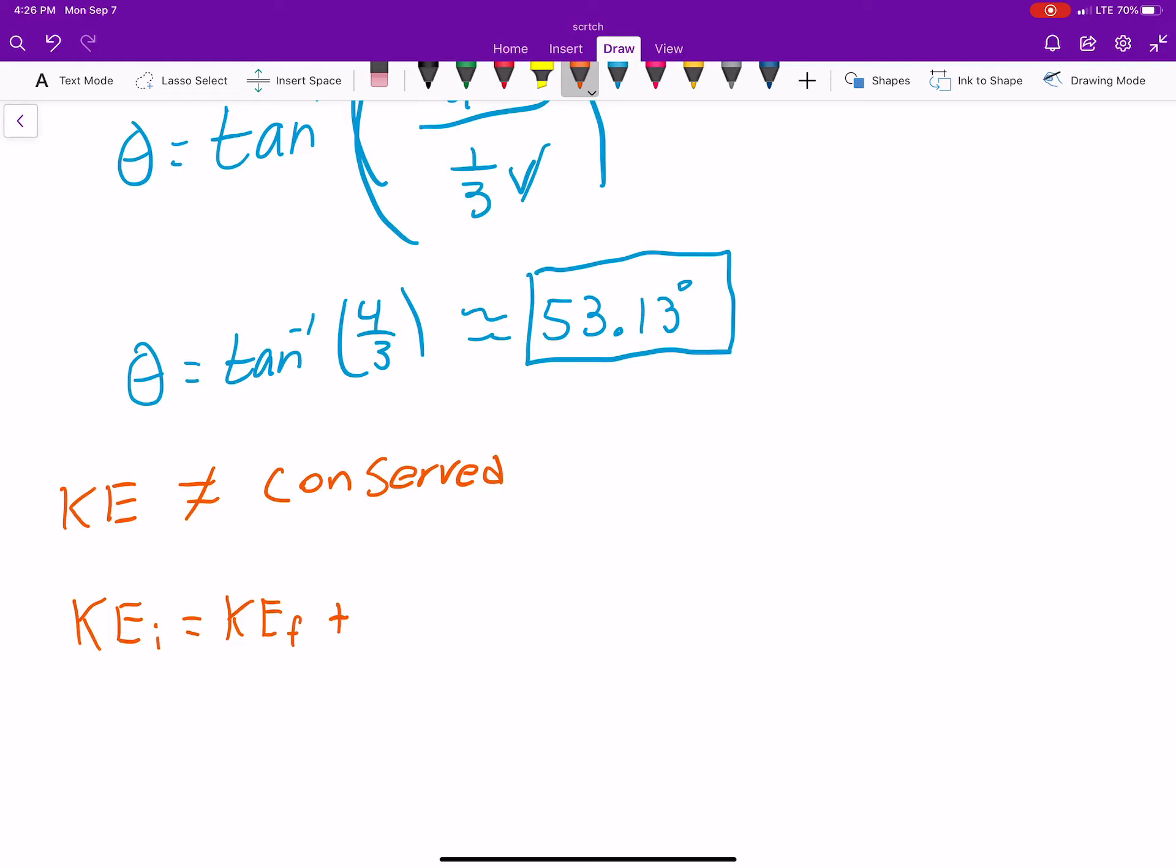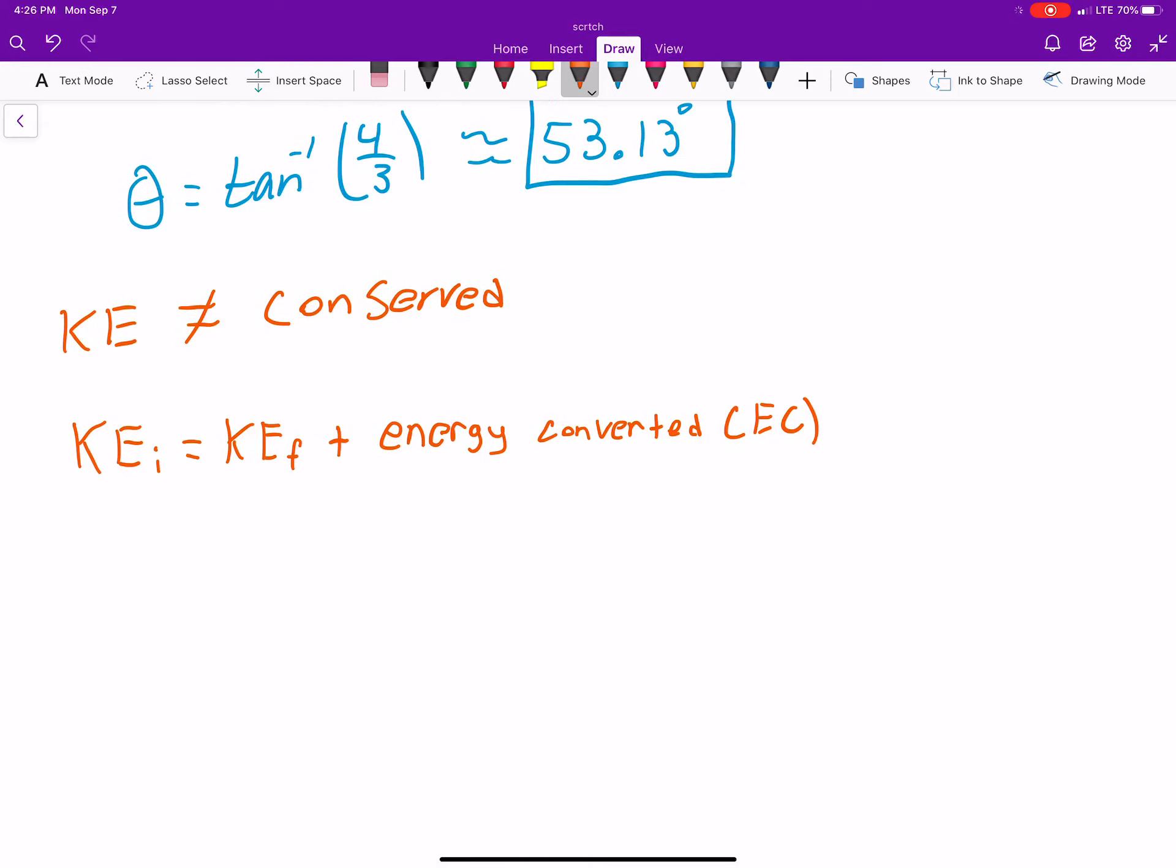So the initial kinetic energy, plus the final, equals the final kinetic energy, plus, I'll just say, energy converted. I'll just call that EC for now. So, negative, the change in kinetic energy, is equal to the energy converted. So, if we subtract the kinetic energy final from both sides, and factor out a negative, it's just the change in kinetic energy.